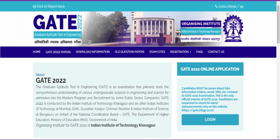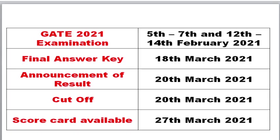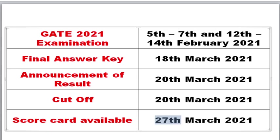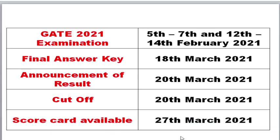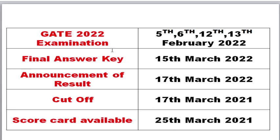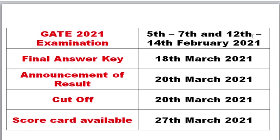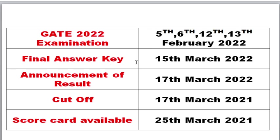For GATE 2021, they released the scorecard on March 27th — within one week of the result. For GATE 2022 this year, the exam was conducted on February 13th. Based on my analysis, the final answer key will be released around March 15th, since the result is announced on March 17th — two to three days before, as seen in the previous year's pattern.